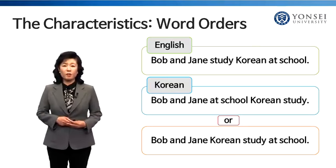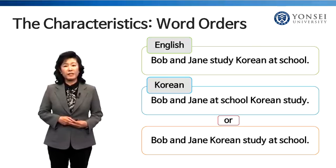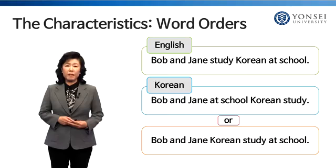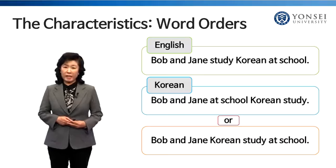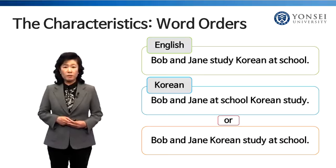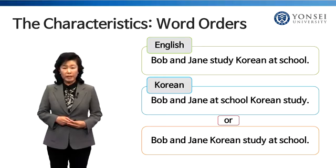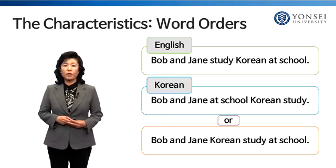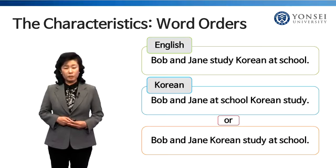Korean is also a language free from word order. As long as there is a verb or an adjective at the end, the sentence would make grammatical sense. For example, if you want to say 'Bob and Jane study Korean at school,' in Korean you can say 'Bob and Jane at school Korean study,' or 'Bob and Jane Korean study at school.'